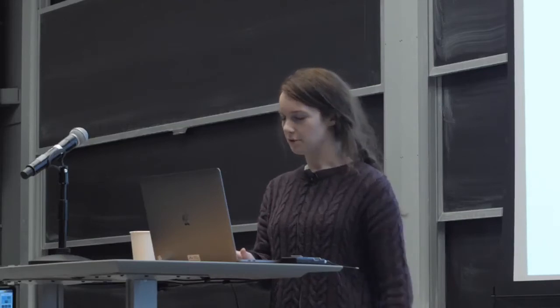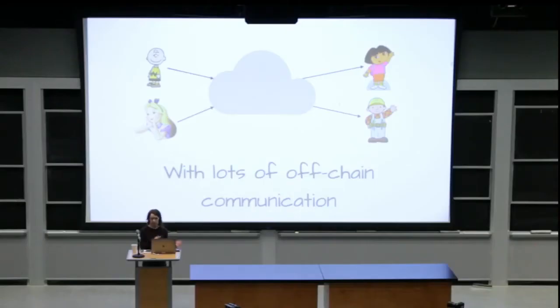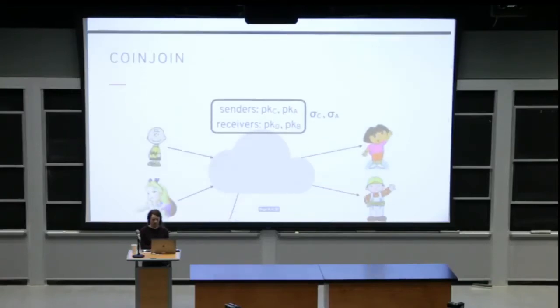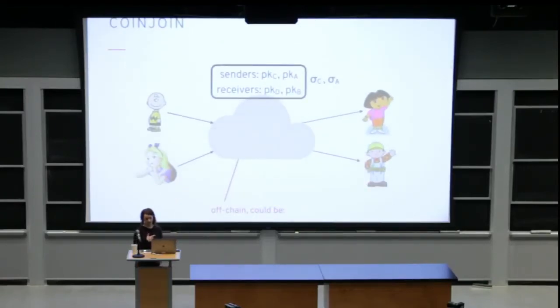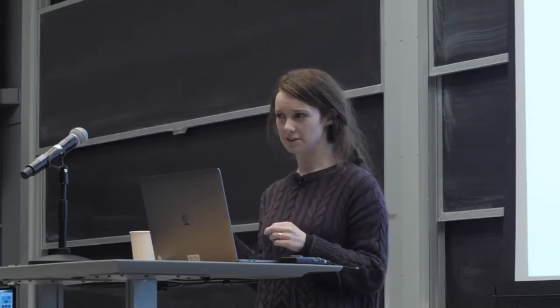We can remove the central mixer, and one way is CoinJoin. Alice and Charlie get together off-chain — via private communication, IRC, or some bulletin board — broadcast their intention to spend money, then all get together, pass around the addresses they want to send to, perform a transaction over all of them, pass it around, and all sign it. You end up with a decentralized mixer: all the money goes in, all the money comes out, and you don't have one-to-one mappings anymore.